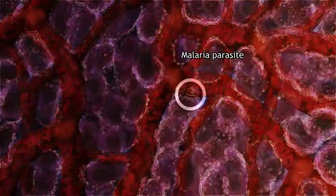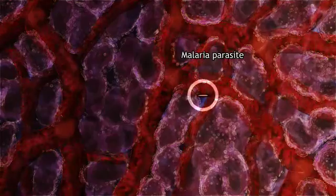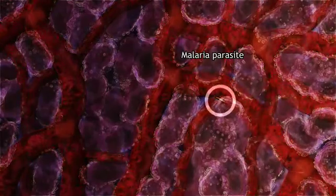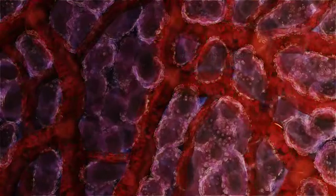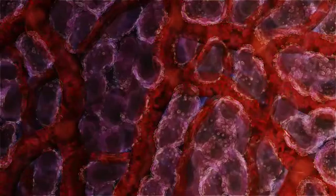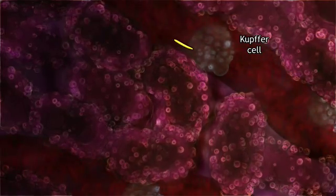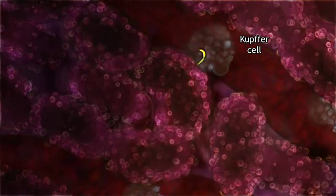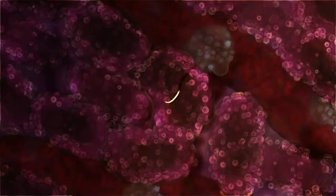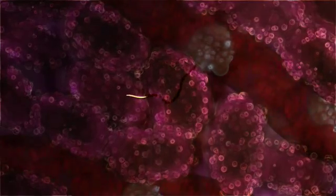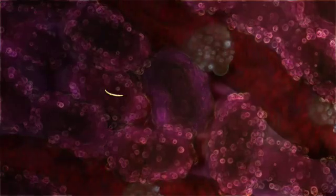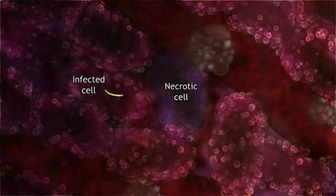Sensing its arrival at the liver, the parasite searches for an exit. A sentinel kupfer cell is the entry point to liver tissue. Leaving the blood, the parasite infects a liver cell, killing one or more other cells on its way.